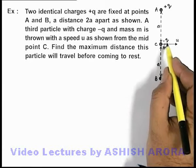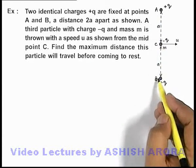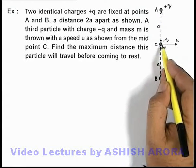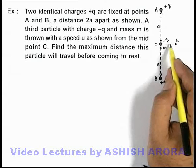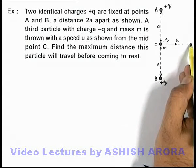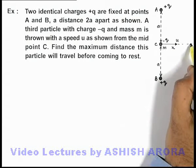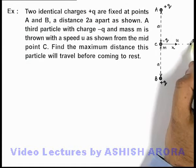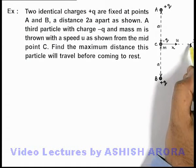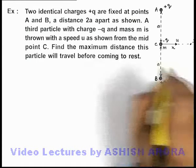As we can see, this is a negative charge and both of these positive charges will attract it. So as it moves away, its speed will decrease and after reaching a distance x from point C, it will come to rest at point D.